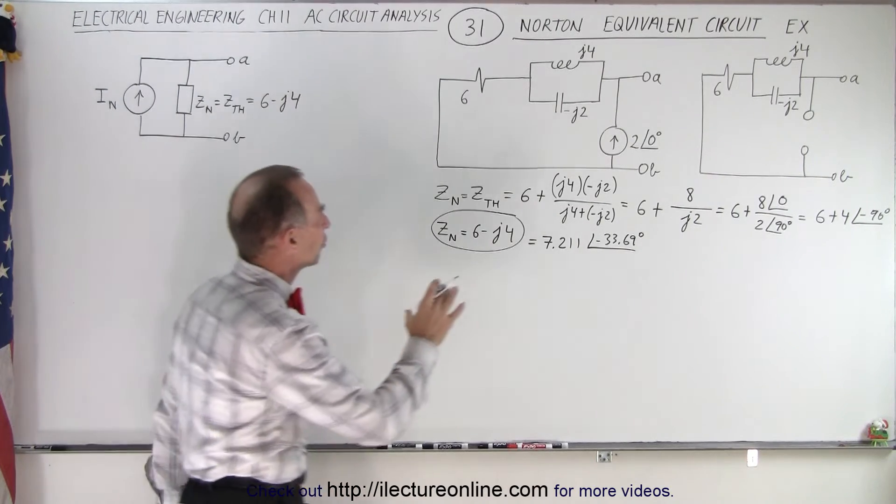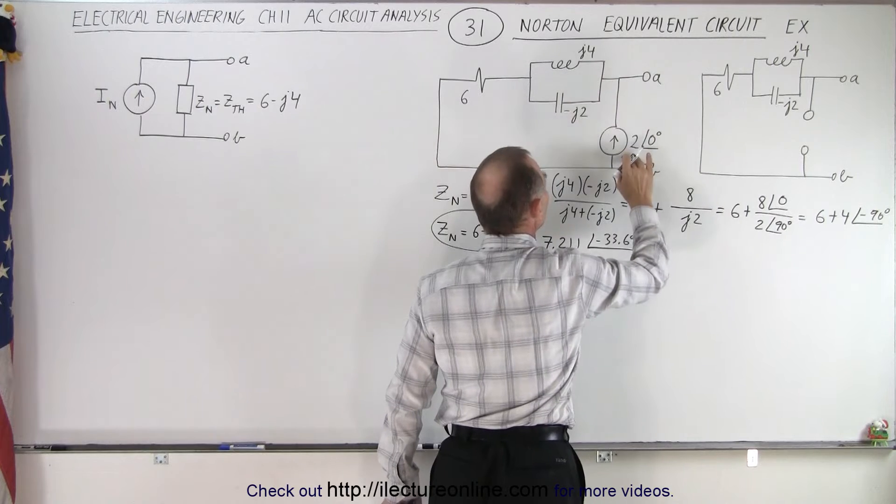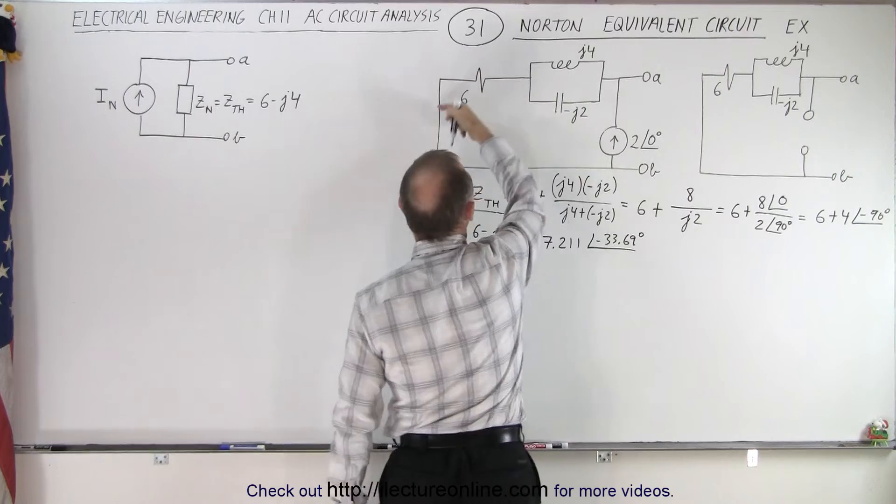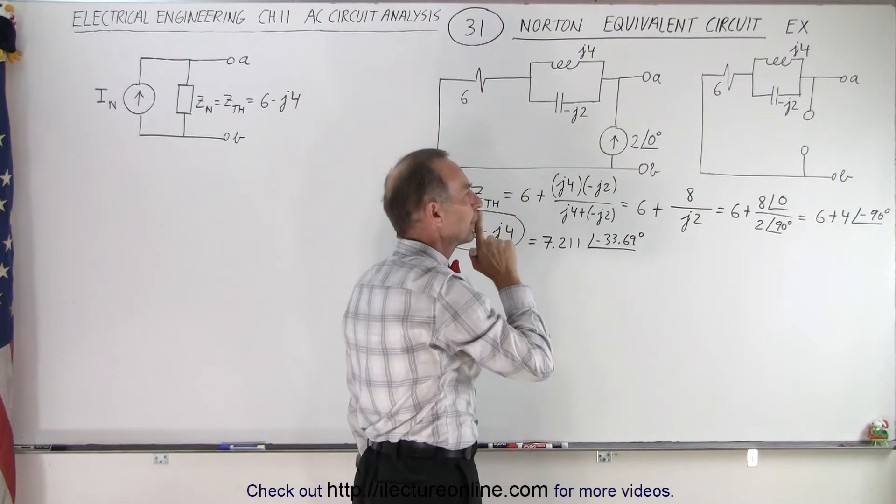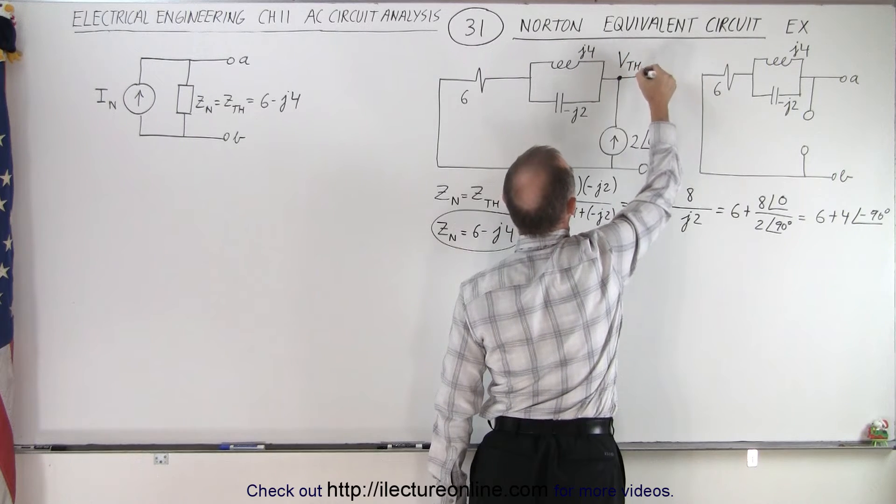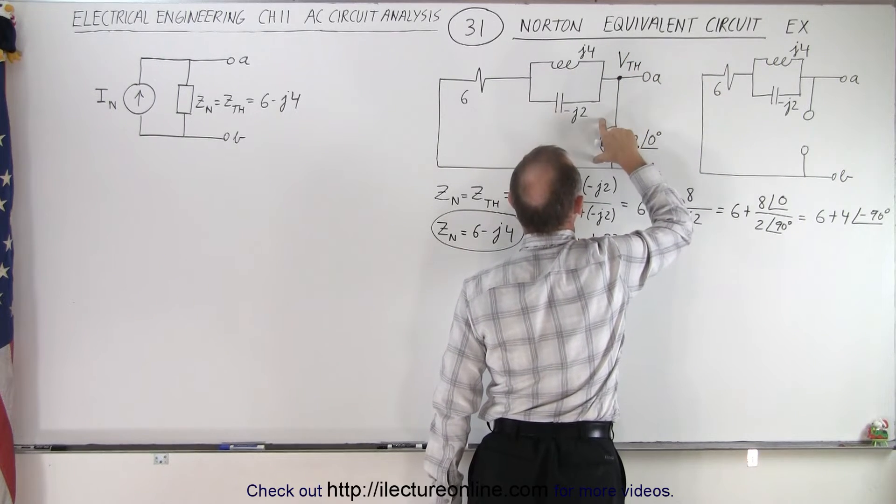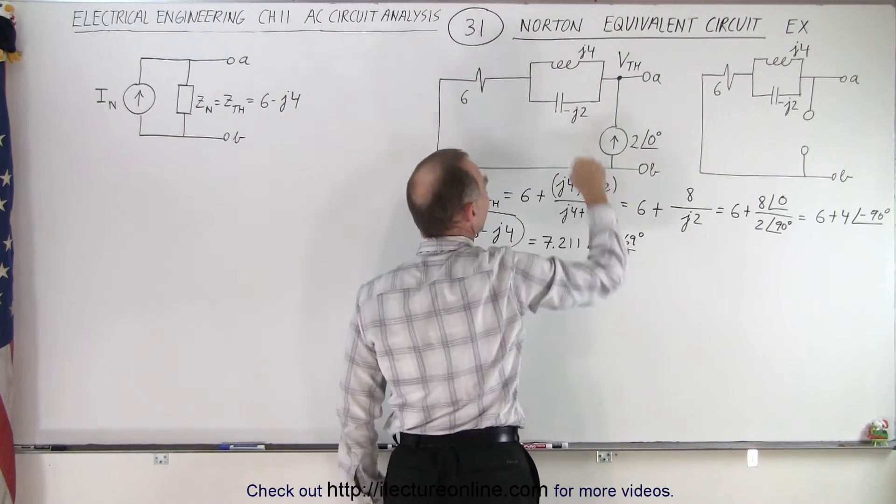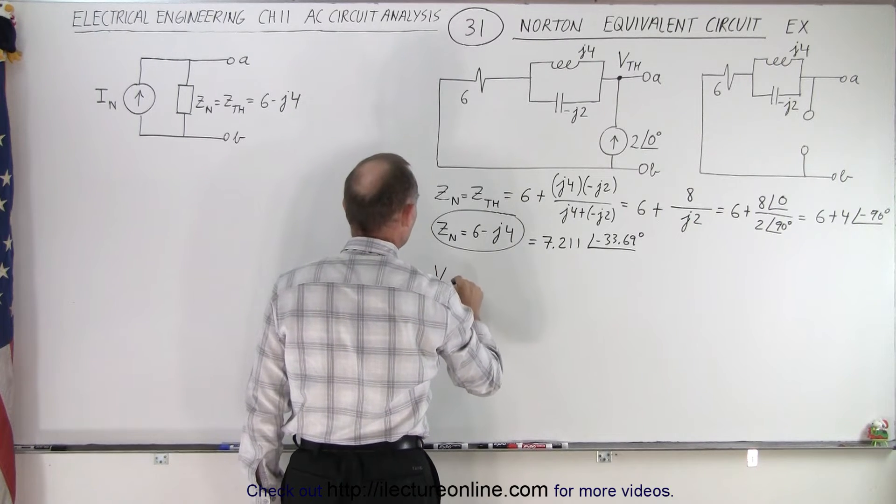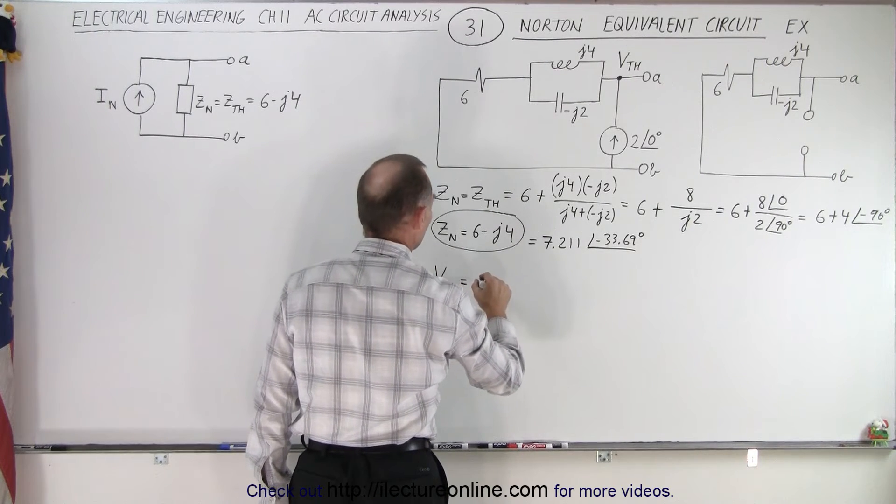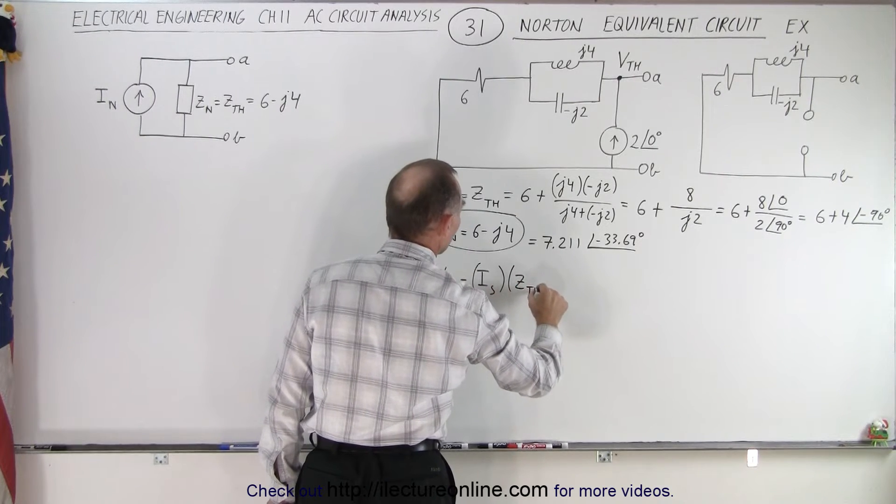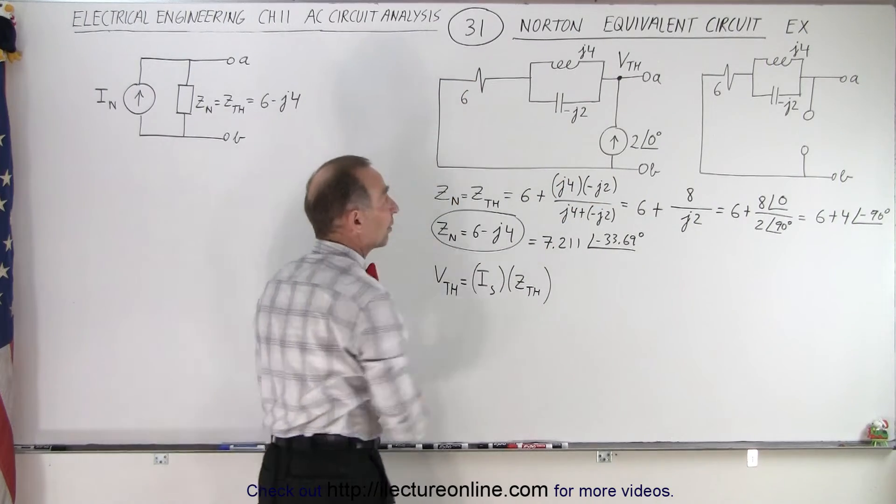What's next? Now we need to find the voltage across A and B. But notice we only have a current source, and the current source is in parallel to the impedance of the rest of the circuit. That means the voltage, which can be called the Thevenin voltage, is going to be equal to the current times the impedance of the other branch because the voltages have to be the same across both branches. So voltage Thevenin equals the current of the source multiplied times the Thevenin equivalent impedance.